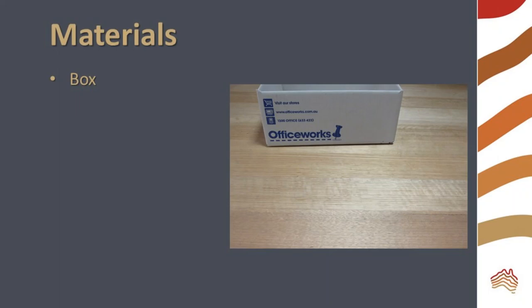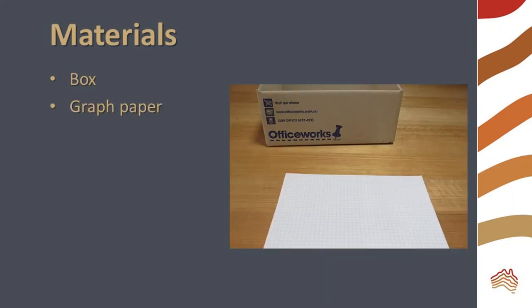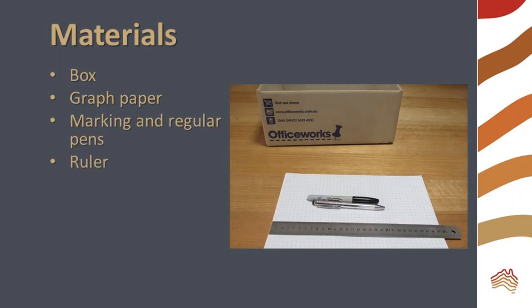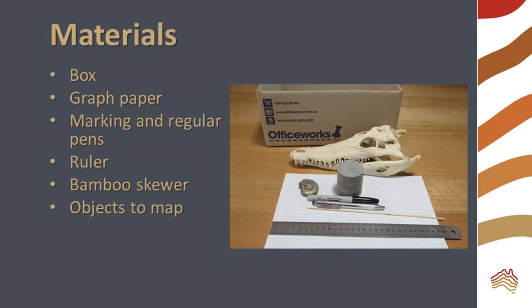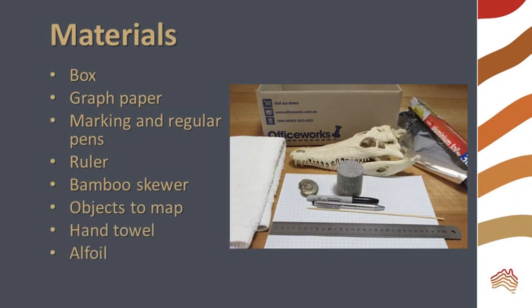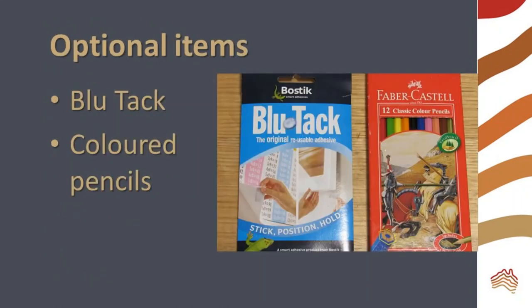You will need a box, graph paper, marking and regular pens, a ruler, a bamboo skewer, objects to map, a hand towel, some alfoil, and some tape. You may also want some blue tack and colored pencils.